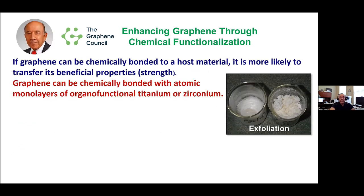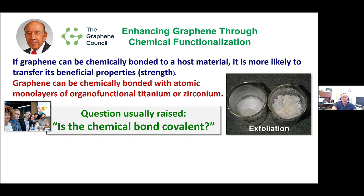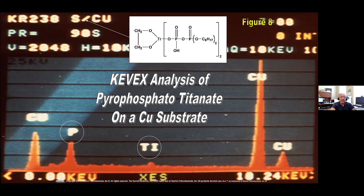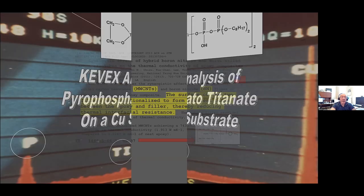The question usually raised is: is the chemical bond covalent? Is it permanent? In our experience, based on what investigators have reported, the bond is covalent and the composite performance bears it out in many aging tests over the last four or five decades. There are things like the EDAX analysis of a chelated phosphato pyrophosphatotitanate on copper, showing phosphorus and titanium and copper elements right on the EDAX analysis — demonstrating atomic monolayer formation. Many technical papers show that the surfaces of fillers were functionalized to form covalent bonds between the epoxy and the filler, thereby reducing thermal interfacial resistance, with carbon nanotubes in epoxy.